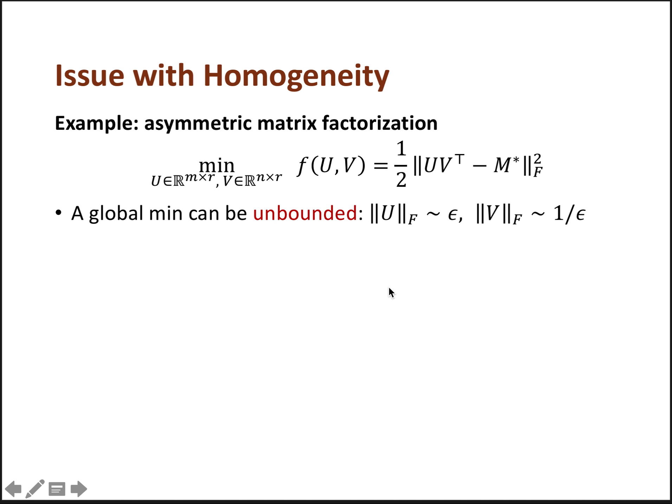A simple observation is that a global minimum of this function can be unbounded, because we can just rescale any global minimum so that U is super small and V is super large and is still a global minimum. Another observation is that this function is not beta-smooth for any finite beta, even at a global minimum. Basically, this also happens at such highly unbalanced points.